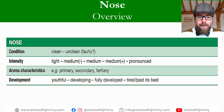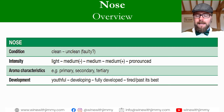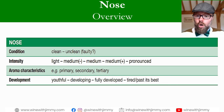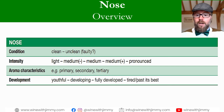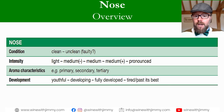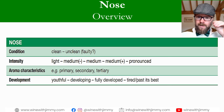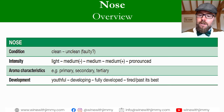Let's talk about the overview here on the nose. These are the parameters that one must look at: condition, intensity, the aromas through primary, secondary and tertiary, and then the development. In this video we'll be talking about condition and intensity.